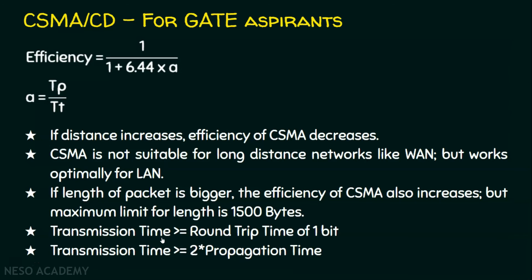The transmission time in CSMA/CD must be greater than or equal to the round-trip time of one bit. Since round-trip time equals two times the propagation time, transmission time ≥ 2 × propagation time. This slide is exclusively for GATE aspirants. We are now done with CSMA/CD.